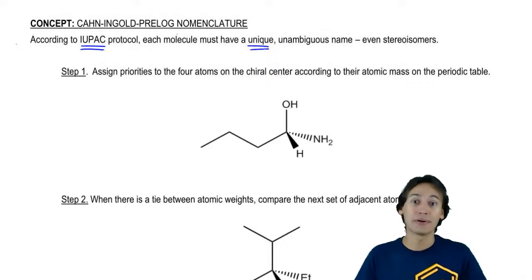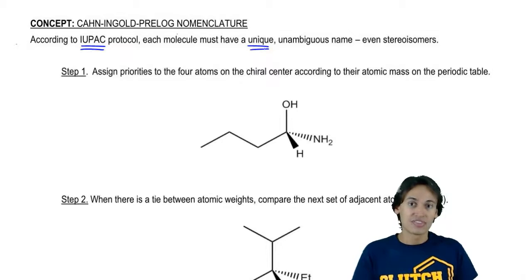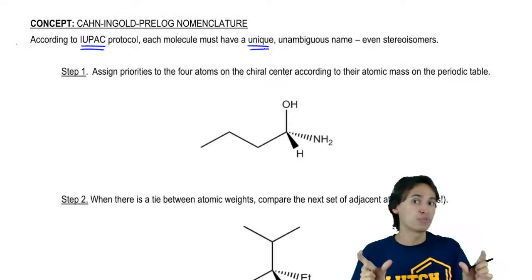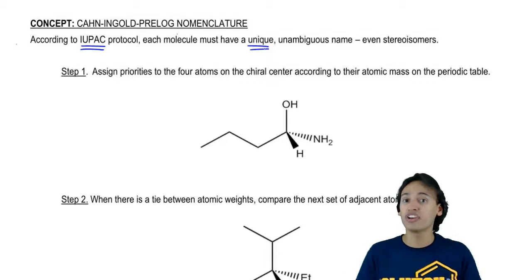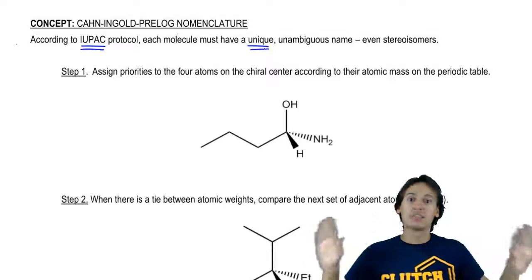Now that we've learned about stereoisomers, meaning molecules that possess chiral centers, that means that those stereoisomers, since they have different shapes, they're going to need to be included in the system somehow because they have a distinctive difference.